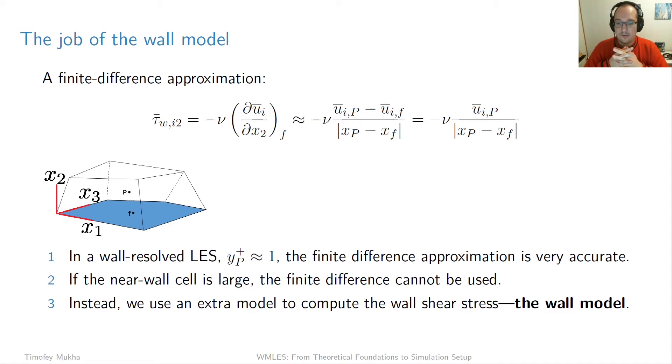Unfortunately, when you're doing wall modeled LES, you no longer adapt the grid to the inner length scales, right? That's the whole idea. We want to save resources by doing that. That means that this finite difference can no longer give you an accurate approximation of the wall shear stress. The reason is basically because the linear relationship no longer holds from the wall. So we have to do something else.